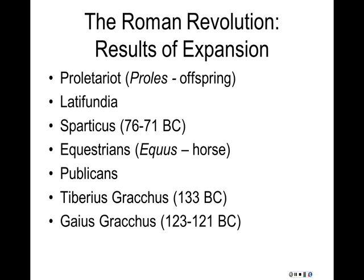There were places in Italy where you didn't see anyone but slaves. All the Roman citizens were living as proletariat in the cities, and the big latifundia were operated by slave labor. Slave owners worked them to death because they were so cheap. You can't treat people like that without paying a cost. Over time, slave rebellions became more and more violent and disruptive. The greatest slave rebellion was led by Spartacus.